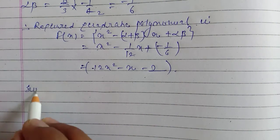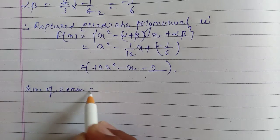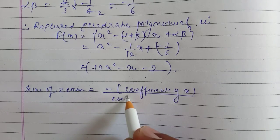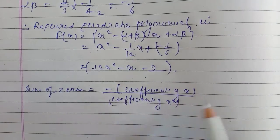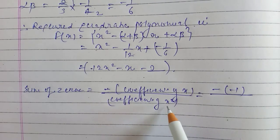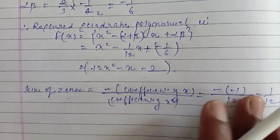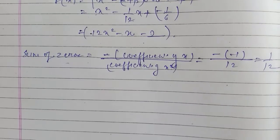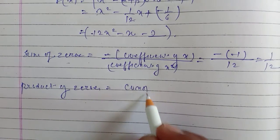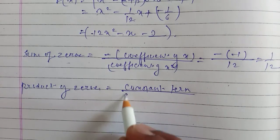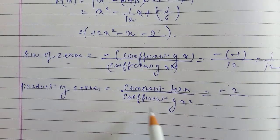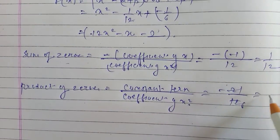Now for verification: the sum of zeros equals minus coefficient of x divided by coefficient of x squared. Looking at the polynomial, the coefficient of x is minus 1 and coefficient of x squared is 12, so minus(minus 1)/12 equals 1/12, which matches. The product of zeros equals constant term divided by coefficient of x squared, which is minus 2/12 equals minus 1/6, which also matches.